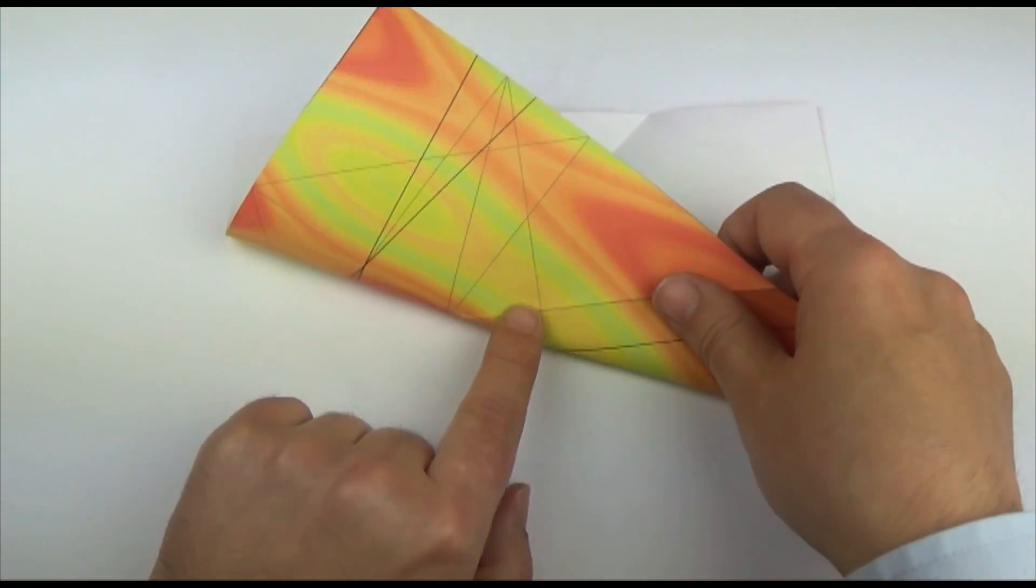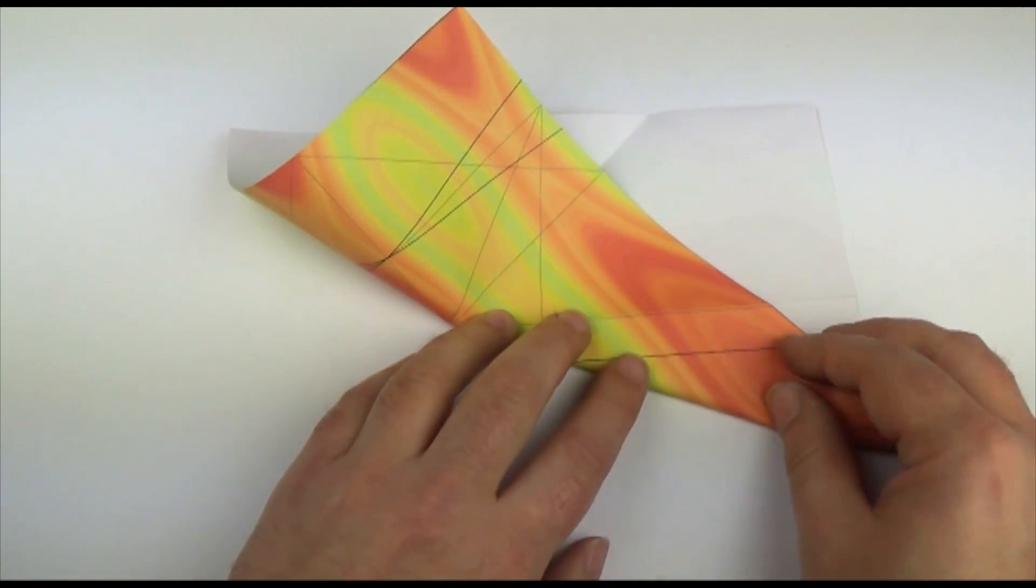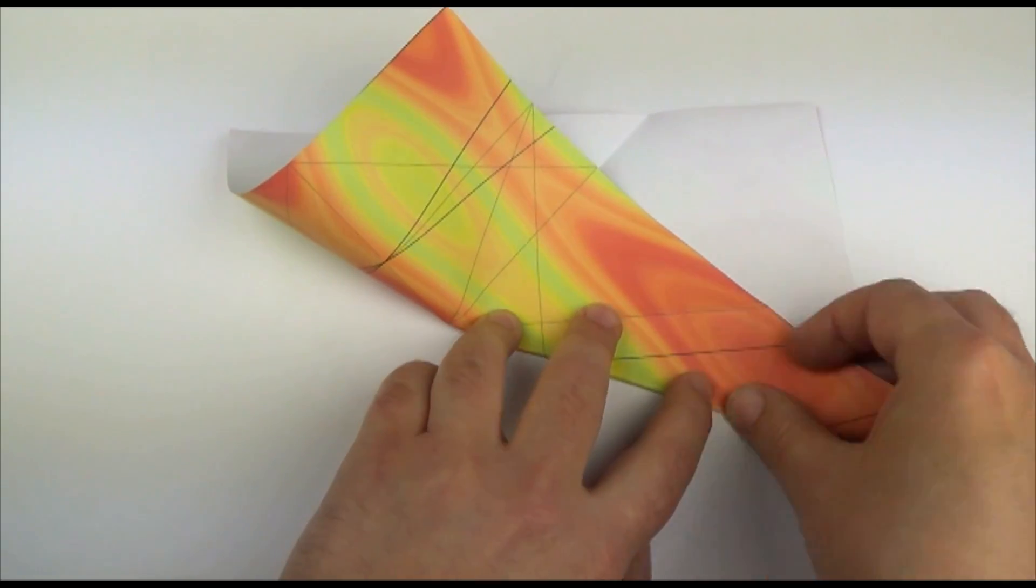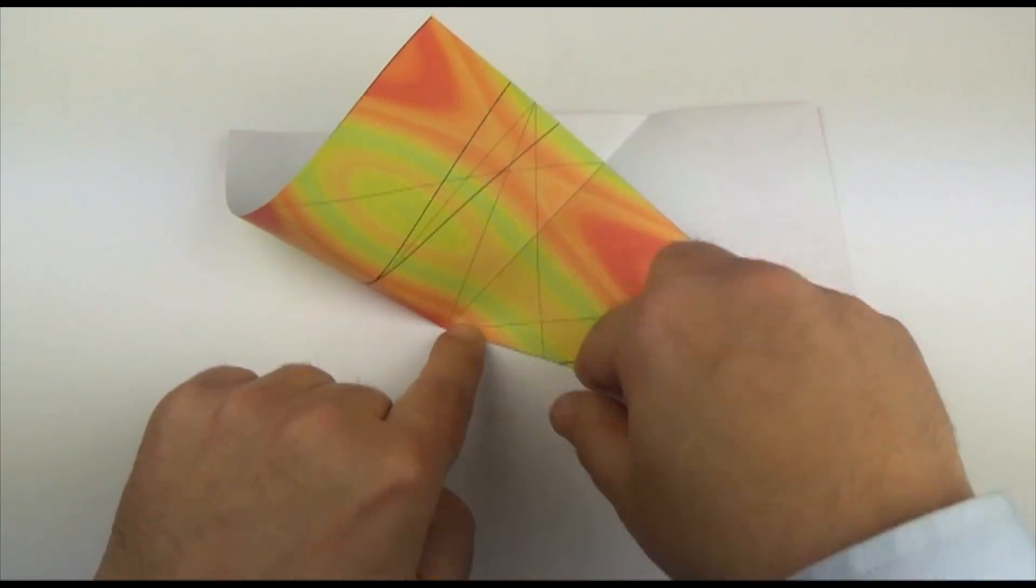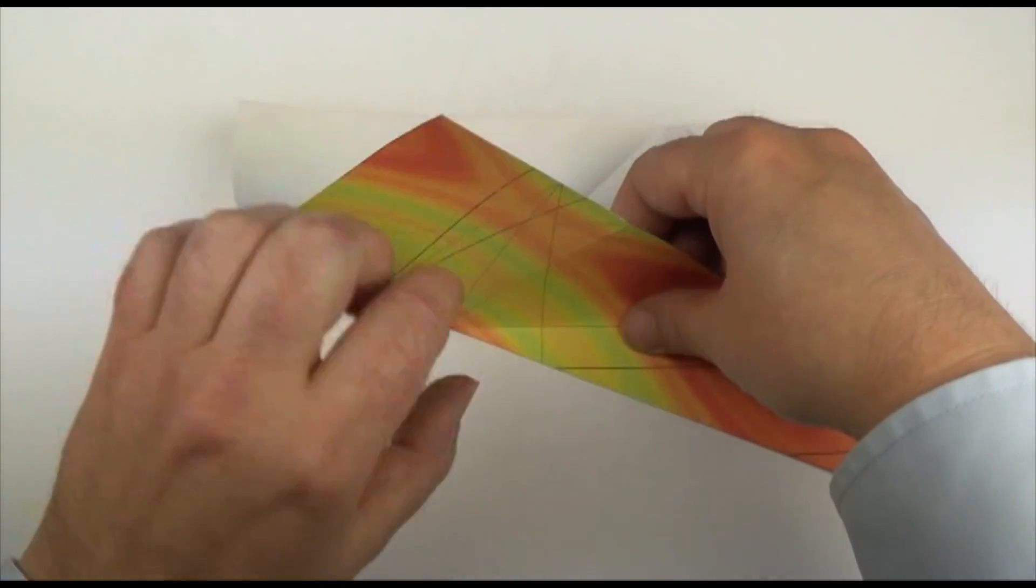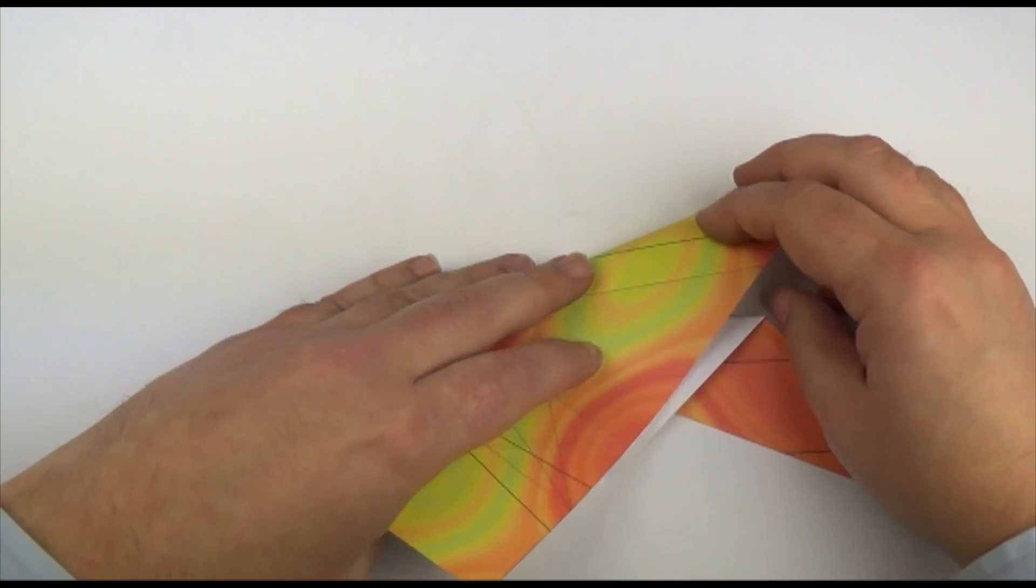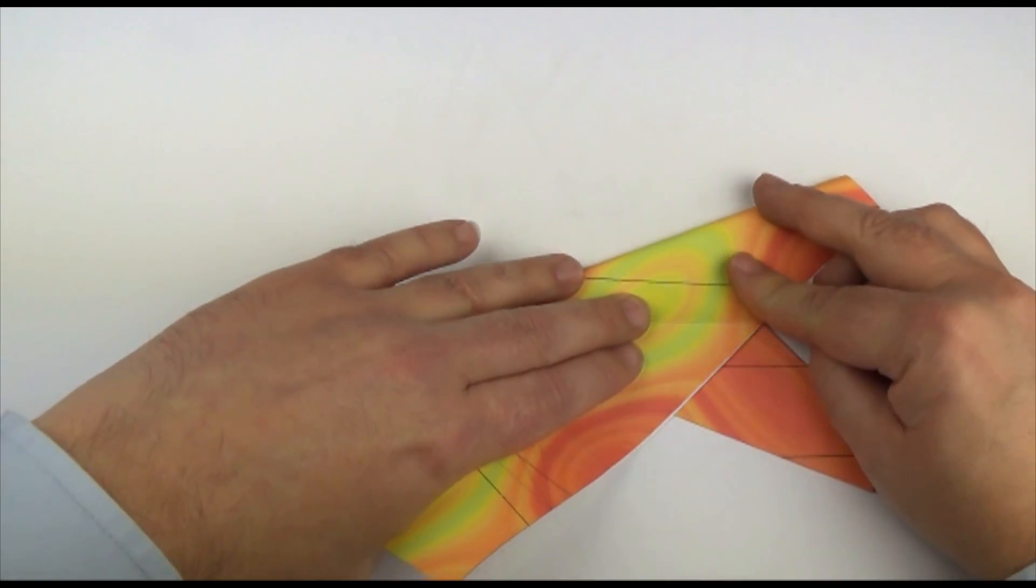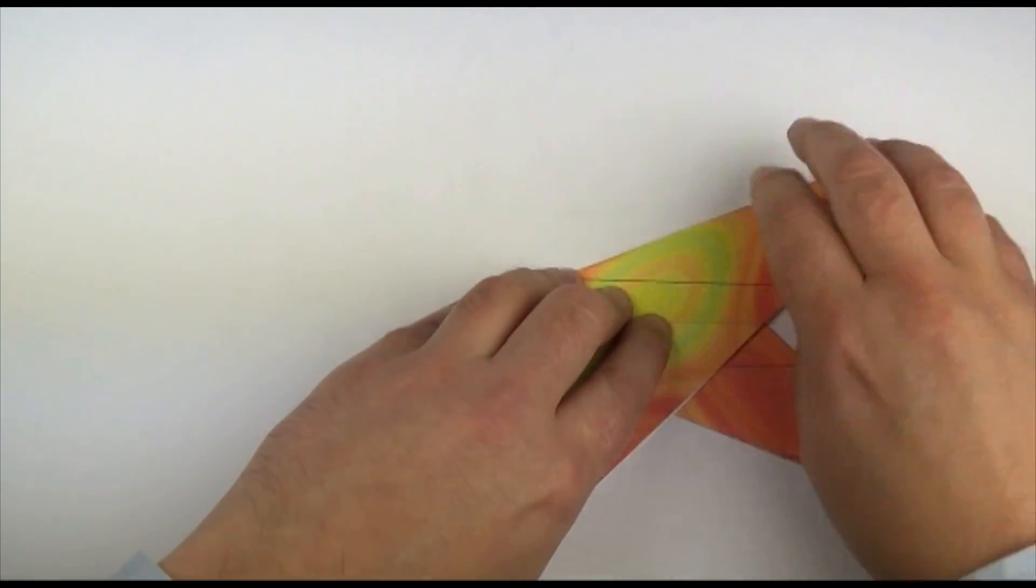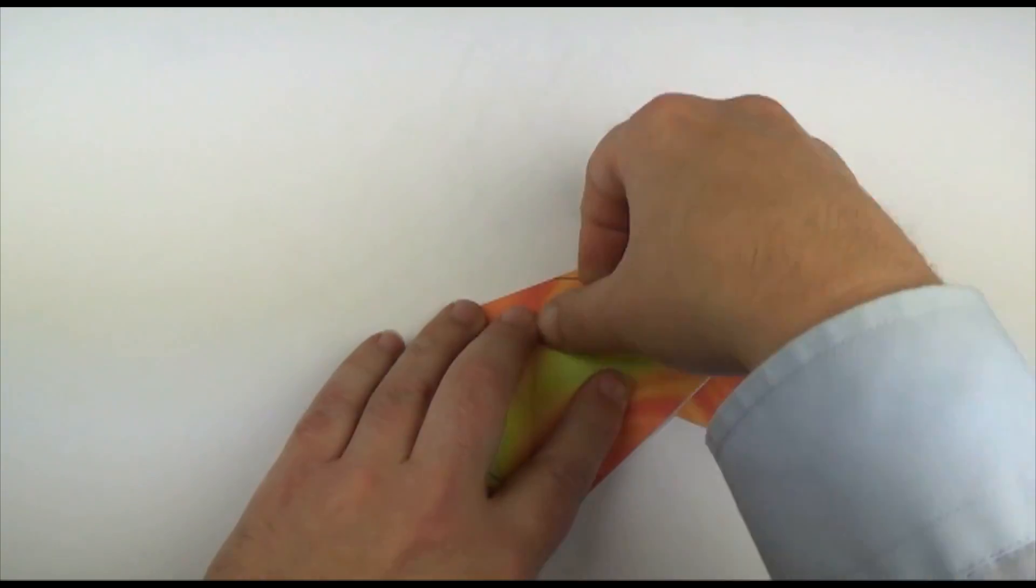Now again I'm going to fold that crease to line up with the middle crease. And done. And then fold the crease over, line up with the fold beneath, and crease.